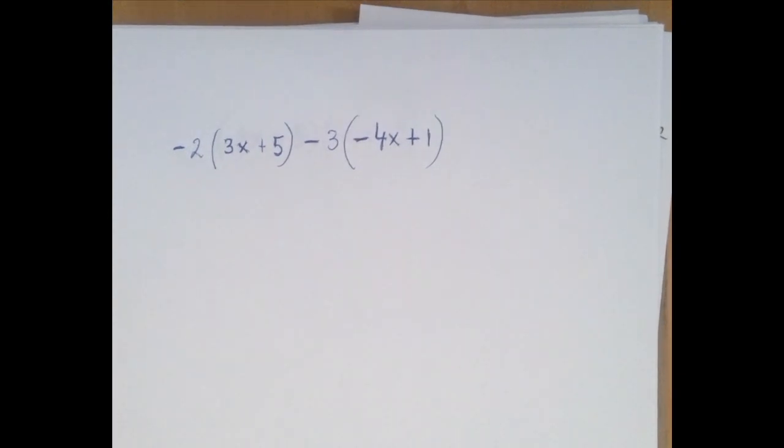We again have the same two algebraic expressions, 3x plus 5 and negative 4x plus 1. But this time both of them are multiplied by a number and that is added. Something like that is called a linear combination.